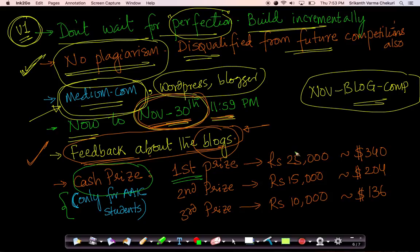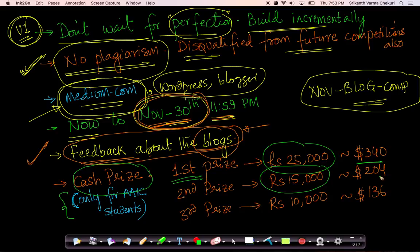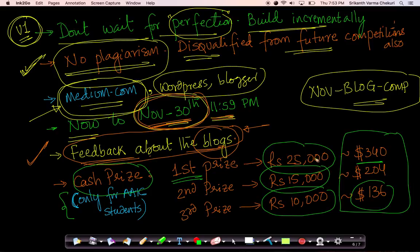For the first prize, we are giving 25,000 rupees or approximately $340 US dollars for students not in India. The second prize is about 15,000 rupees or roughly $204. The third prize is 10,000 rupees, which is roughly about $136. These dollar amounts might change based on currency conversion rates.